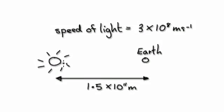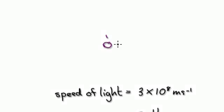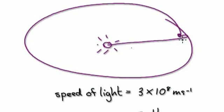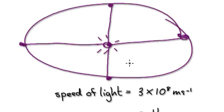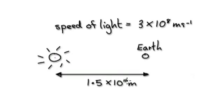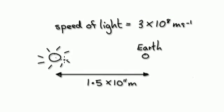Let's give you some more practice. Let's say the average distance between the Earth and the Sun is 1.5 times 10 to the power of 11 meters. We say 'average' because when the Earth revolves around the Sun, it doesn't do it in a perfect circle — it follows an elliptic path, so the distances vary. We take the average of all those distances. Now, the speed of light is also given. The question is: how long does it take for light from the Sun to reach Earth?